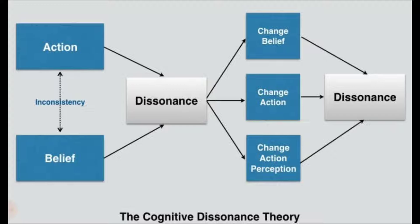The third is changing action perception. Here, you do believe that lying is bad, and you also continue to lie in the future, but you change your perception about lying. You say to yourself that if I lied and it ultimately saved somebody's life, then I'm not doing something bad — it's actually something good. So you are changing the perception about your action, which in this case is lying, and that ultimately reduces the tension in your mind. This is the third way to reduce cognitive dissonance.